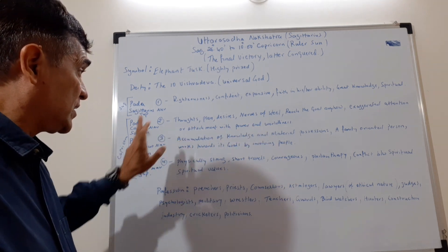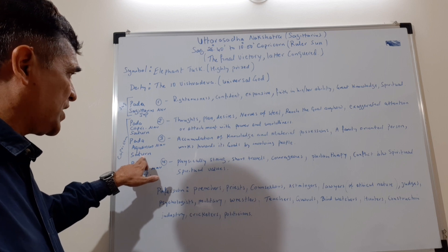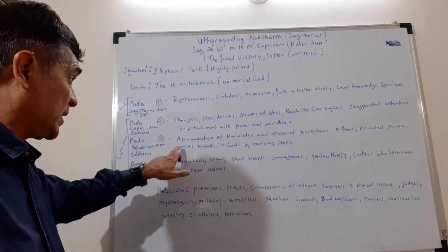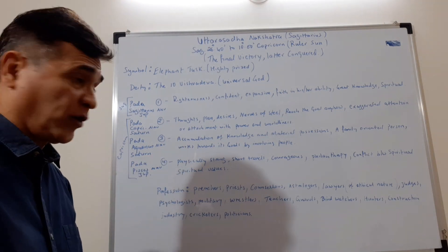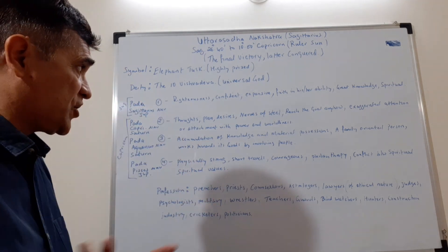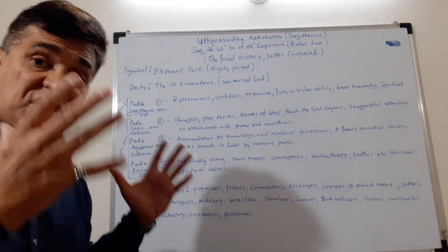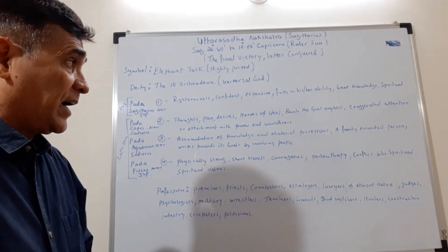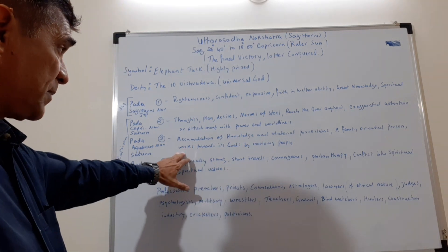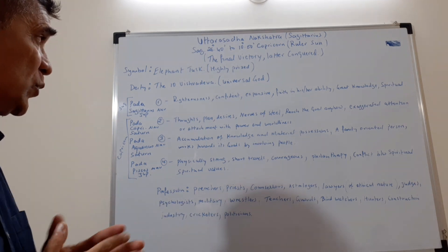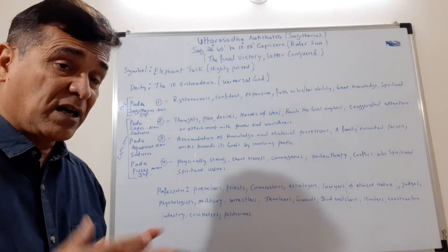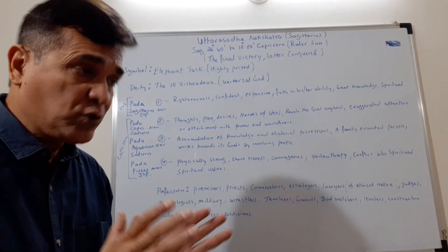The third pada is Aquarius in the Navamsha, still in Capricorn, and the ruler is Saturn. There is accumulation of knowledge — you never stop learning. You also accumulate material possessions. You are a very family-oriented person, and you always work towards your goal by involving and taking other people along with you.